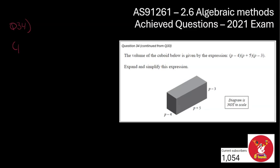So let's write down my expression. So it's going to be p minus 4 times p plus 5 times p minus 3.